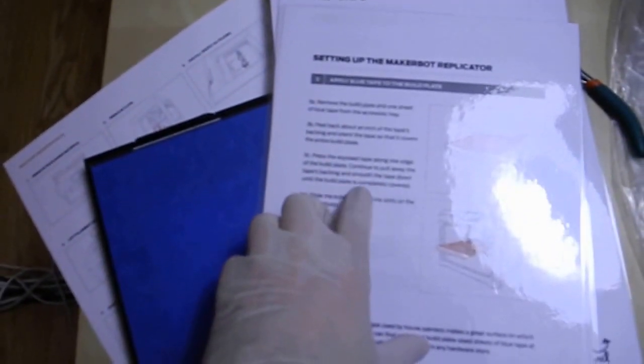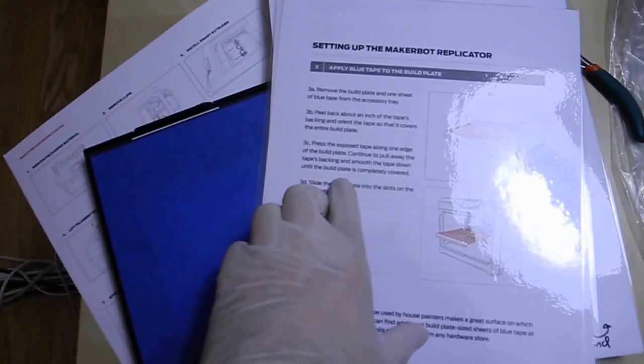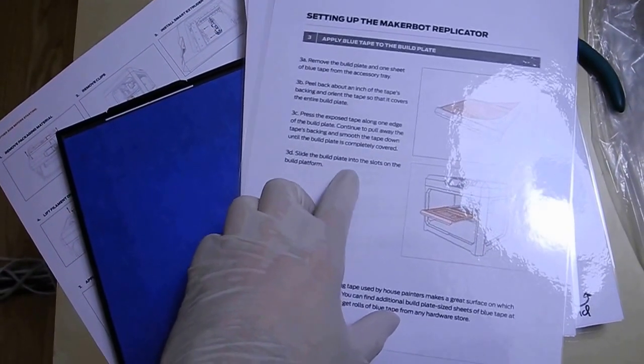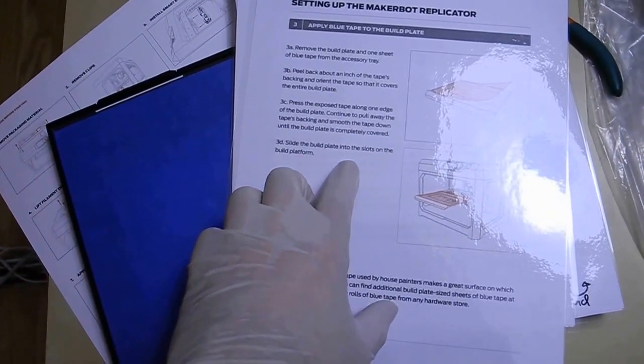Alright, doesn't look too bad. Actually looks quite okay. Press the exposed tape along one edge of the build plate, continue to pull away the tape's backing and smooth the tape down until the build plate is completely covered. Slide the build plate into the slots on the build platform.